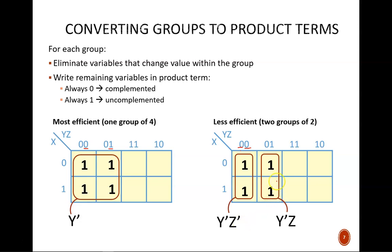For the second group, X changes, so it drops out. Y is always 0, so we include Y'. And Z is always 1, so we include Z, no prime. Thus, the product term is Y'Z.